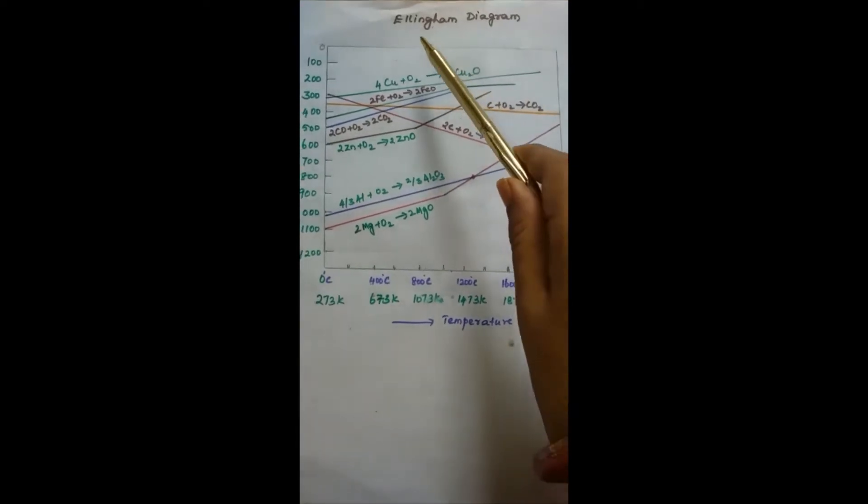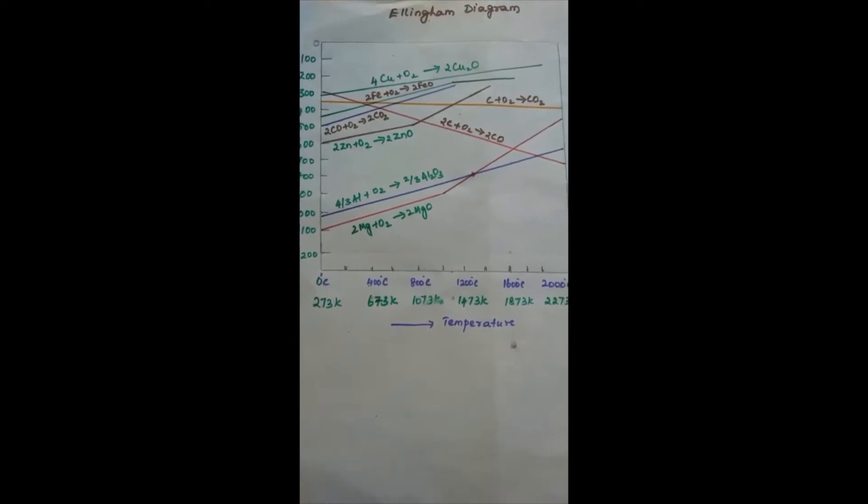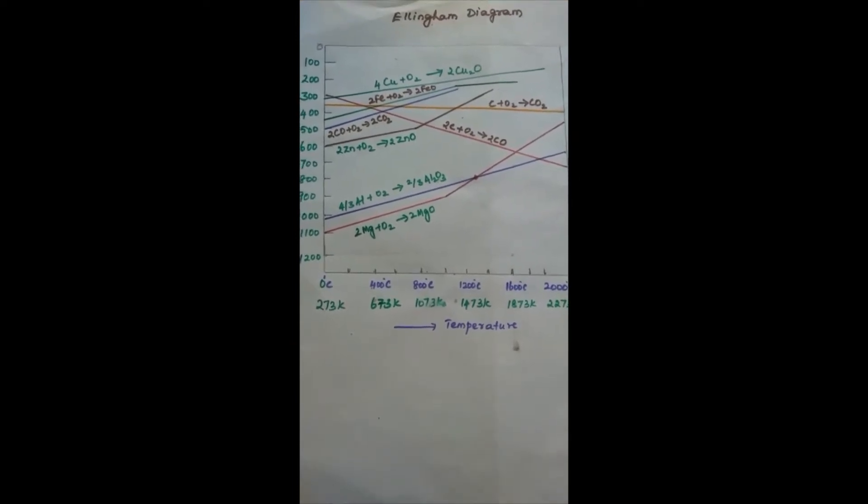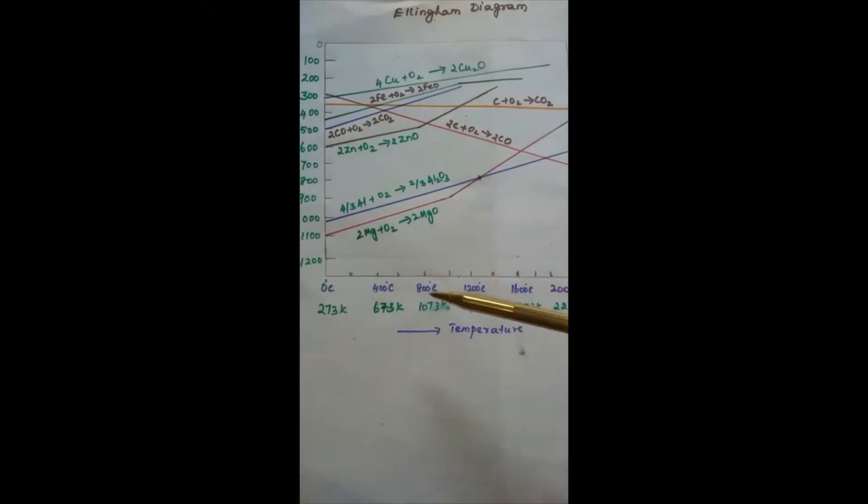In today's segment, I will be discussing the Ellingham Diagram. Ellingham Diagram is an important concept in metallurgy. It provides a graphical representation of Gibbs energy.